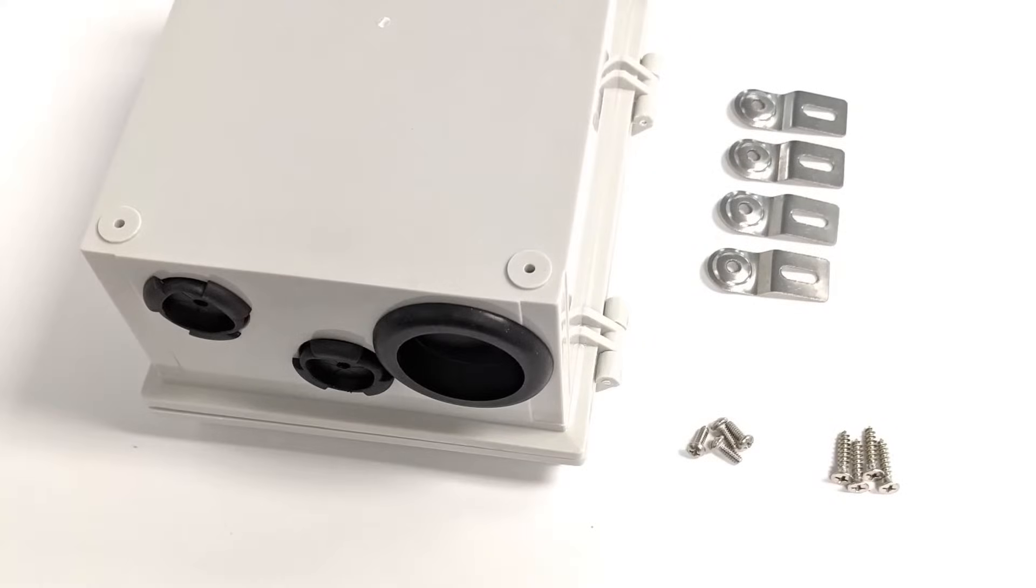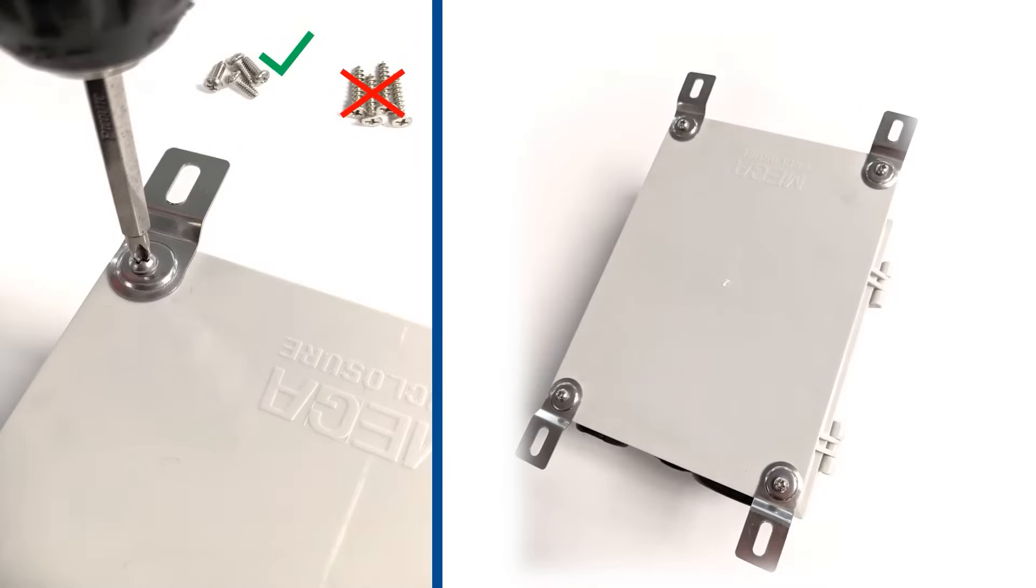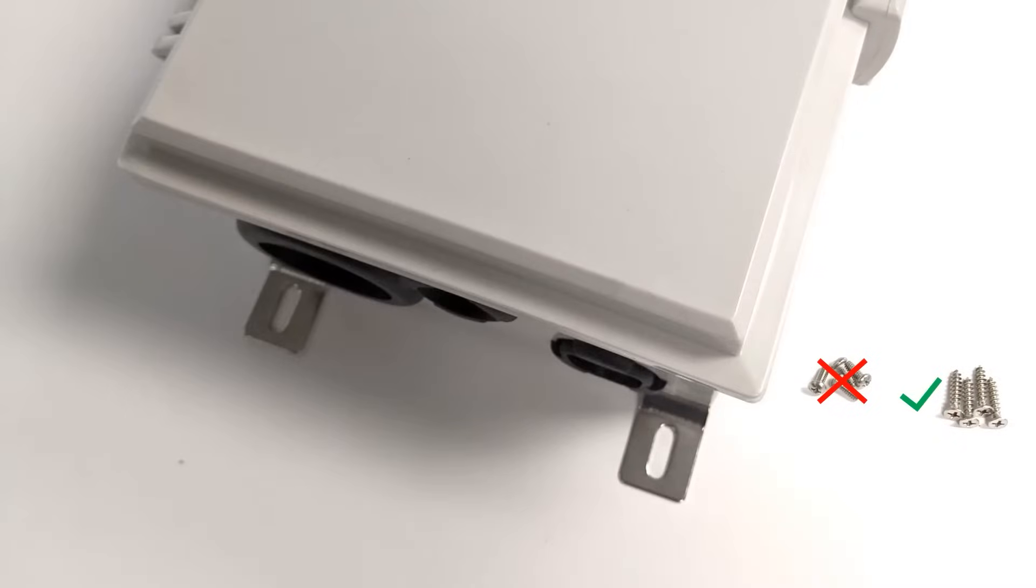To install them, simply screw in the ear brackets into each of the four corner holes located on the back of the enclosure. Now that you have all four brackets installed, you can utilize the mounting holes to secure and fasten the enclosure onto a wall.